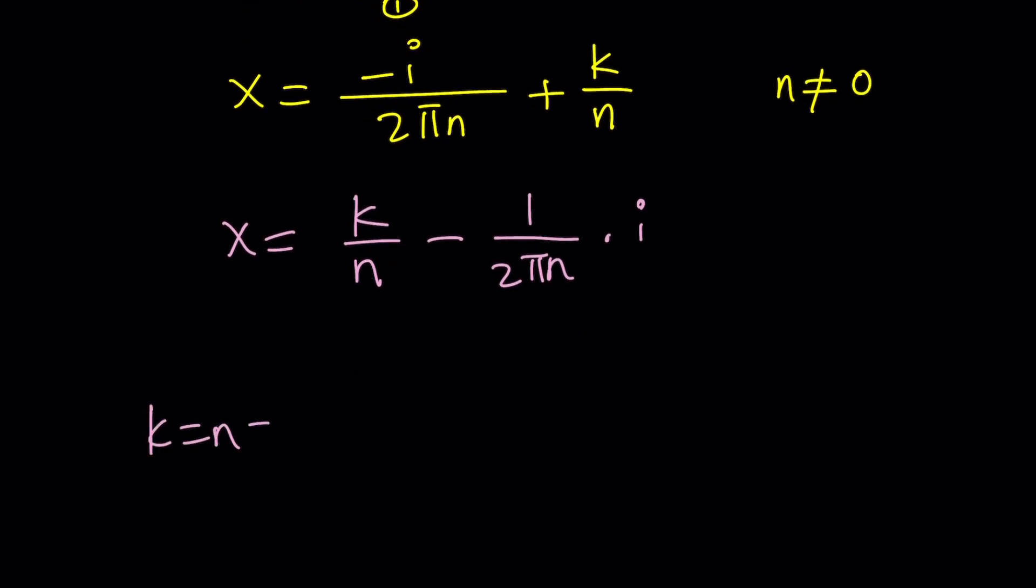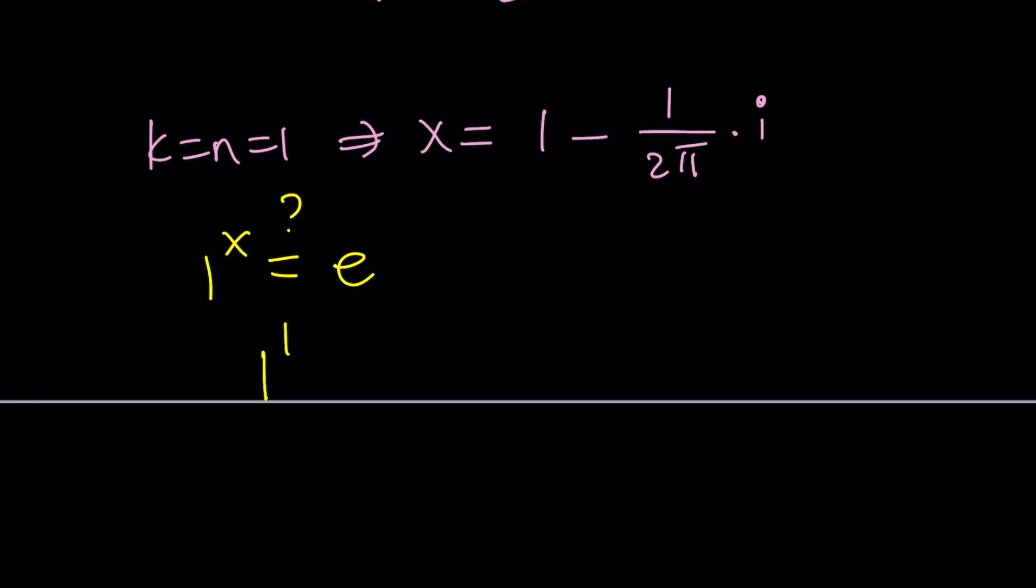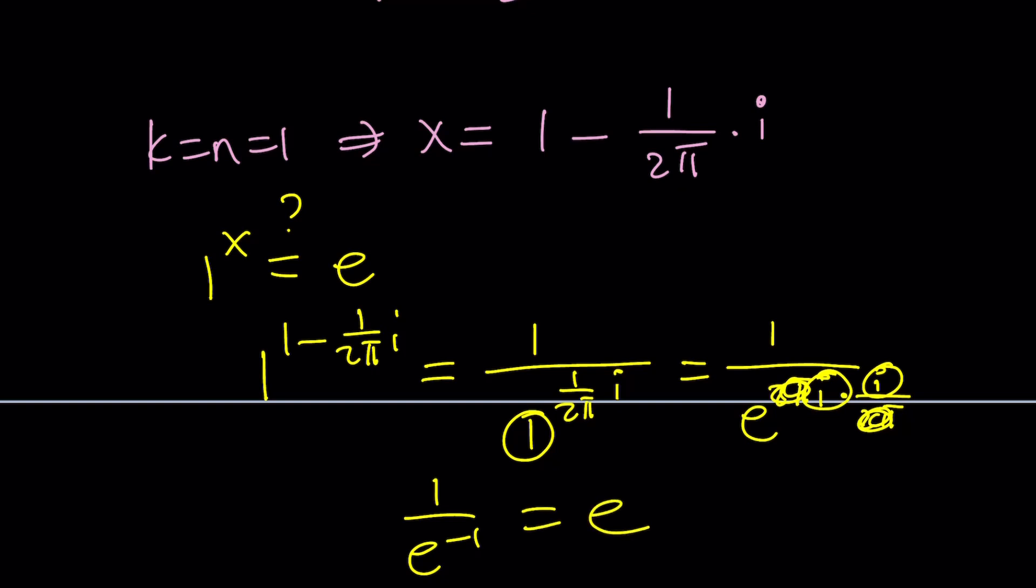What happens if k and n are both 1? Let's take a look at that particular case. If k and n are both 1, then we get something super simple. x equals 1 minus 1 over 2 pi times i. We're going to plug this in, because we want to make sure that at least one of the solutions work. 1 to the x equals e. Is that satisfied by this solution? 1 to the power 1 minus 1 over 2 pi i. That's supposed to equal 1 over 1 to the power 1 over 2 pi i. I put that negative exponent in the denominator. What is 1 to the power 1 over 2 pi i? We can write the 1 as e to the power 2 pi i, and then multiply by i over 2 pi. 2 pi is going to cancel out. i times i is i squared. 1 over e to the power negative 1, and that's going to be e. So it's satisfied at least for these particular values.